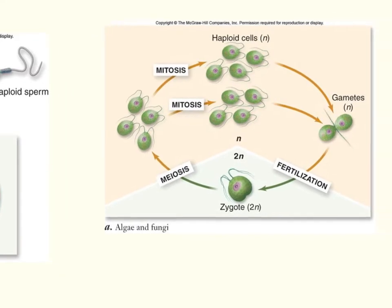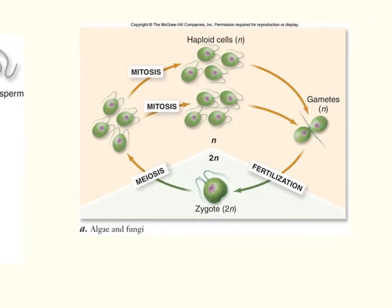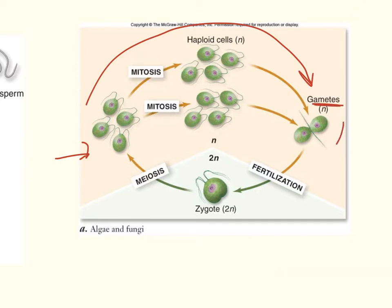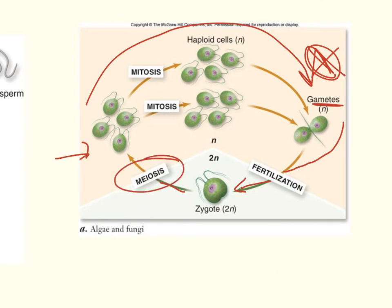For example, algae and fungi spend most of their life cycle in the haploid state. These organisms carry out most of their life cycle in the haploid stage, then two haploid gametes are produced. They will fuse together in fertilization to produce a diploid zygote, which then goes through meiosis — meiosis occurs here to produce the haploid organisms that carry out most of their life cycle in the haploid state.